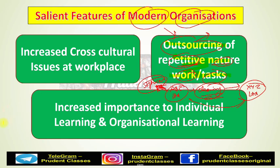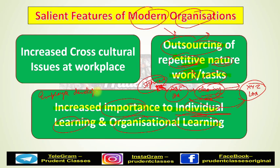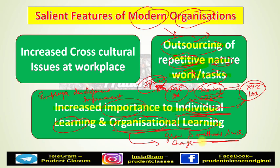The last salient feature is increased importance given to individual learning and organizational learning. Modern organizations know that if employees don't develop themselves, they won't be able to develop the organization. So considerable importance is being given to employee development and improvement. Along with this, organizations are also focusing on how they themselves can grow — what methods or techniques to use so that the organization can also change, improve, manage new things, and face the changing environment.